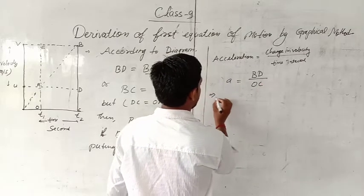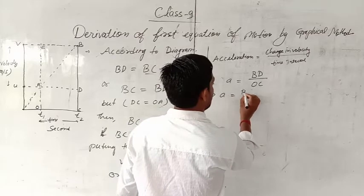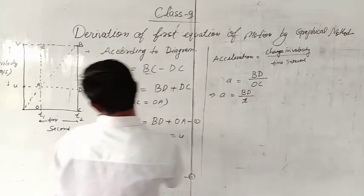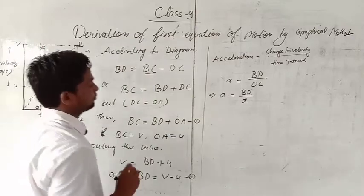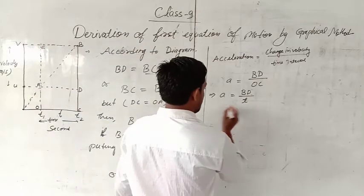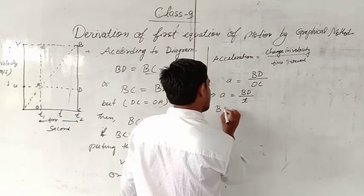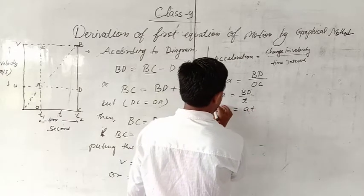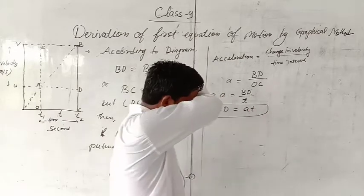Now putting the value: A equal to BD upon T. Total time is T. If we solve the problem, BD equal to AT.